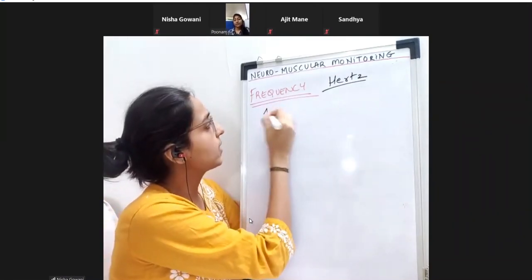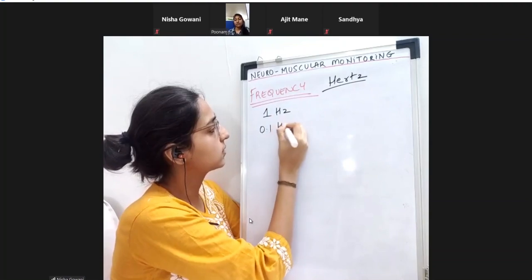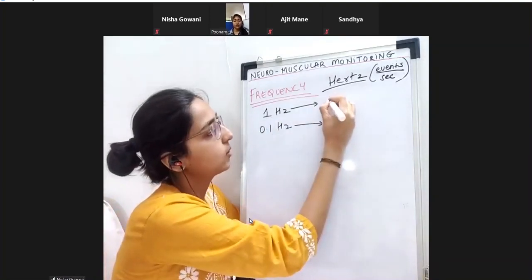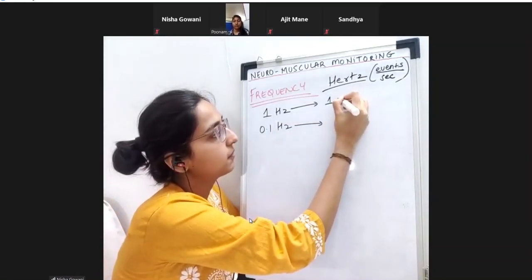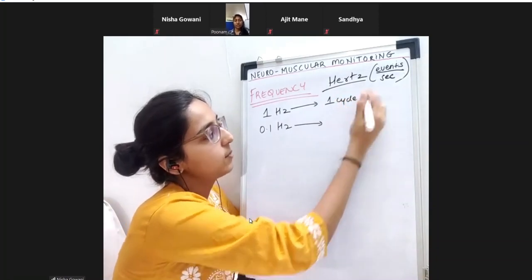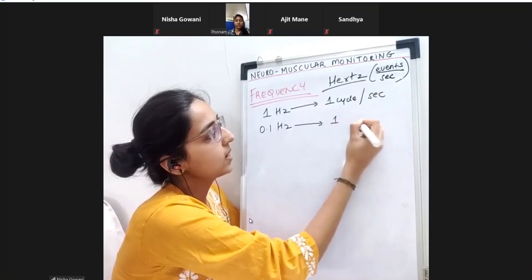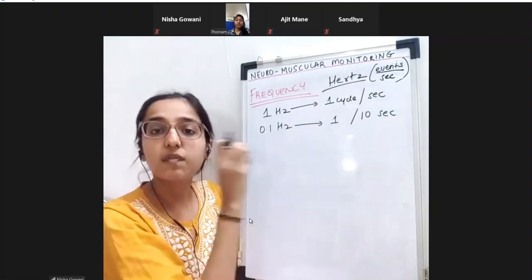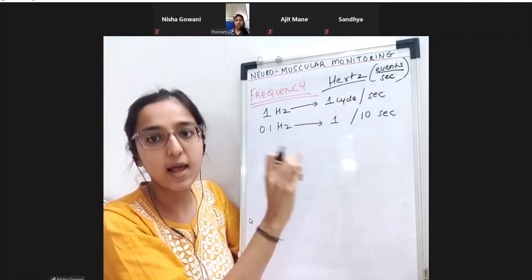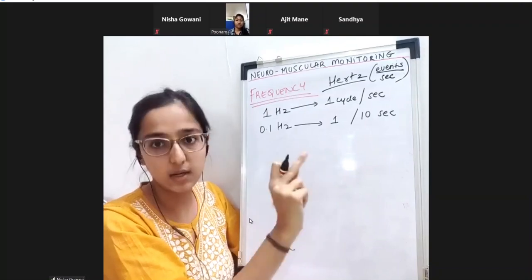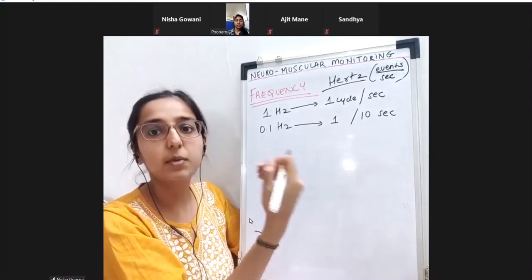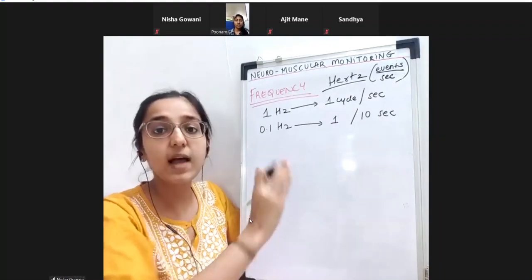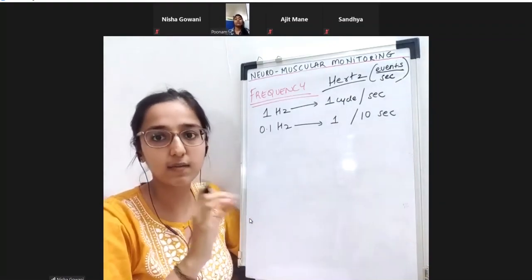1 hertz means one current stimulus per second; 0.1 hertz means one current stimulus per 10 seconds. If 30 mA is delivered at 1 hertz, every 1 second 30 mA is delivered. At 0.1 hertz, 30 mA is given after every 10-second interval.